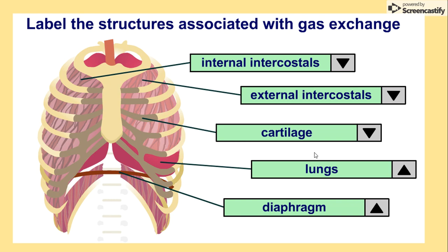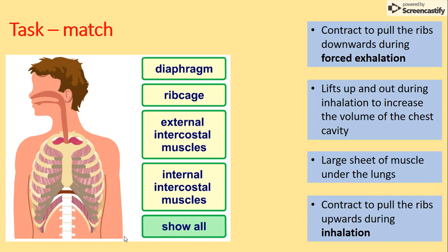We've got internal intercostal muscles, external intercostal muscles, the ribcage, lungs, and the diaphragm. The diaphragm is a large sheet of muscle found under our lungs. The ribcage lifts up and out when we're breathing in to increase the volume of the chest cavity. External intercostal muscles contract to pull the ribs upwards when breathing in, and internal intercostal muscles contract to pull the ribs downwards when breathing out.